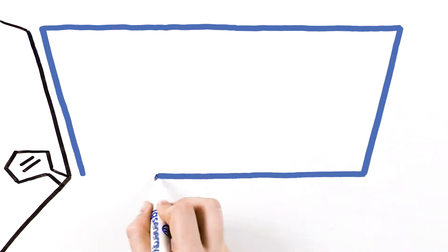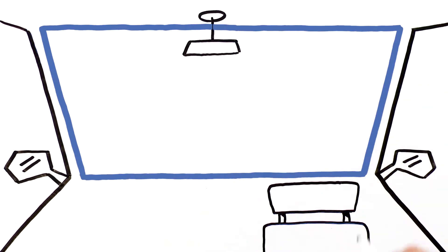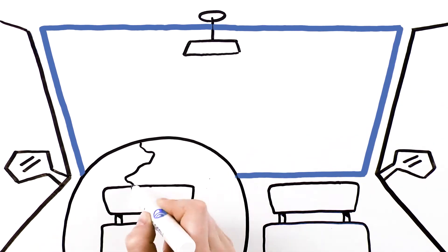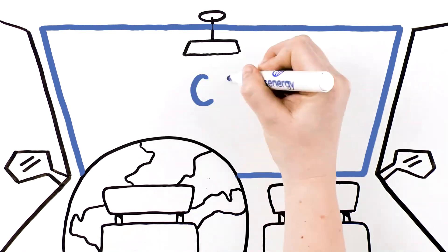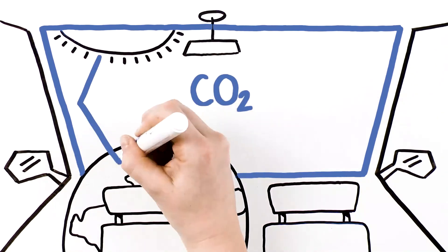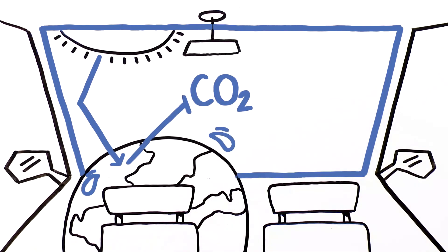Think of it like leaving your car outside on a hot summer day. If the inside of your car is the planet, your windshield is CO2. It lets the sun's light in, but doesn't let the resulting heat out.